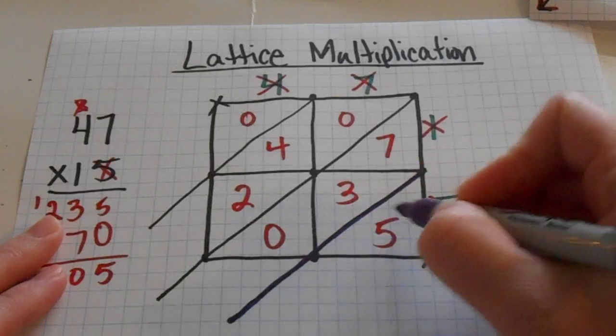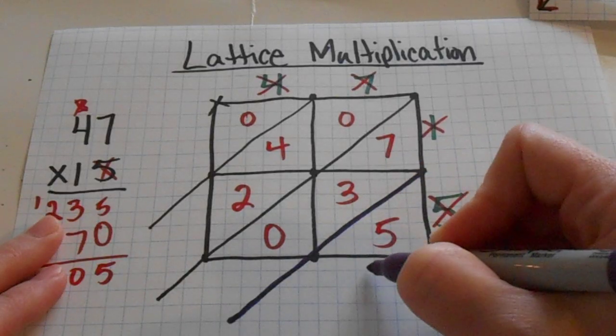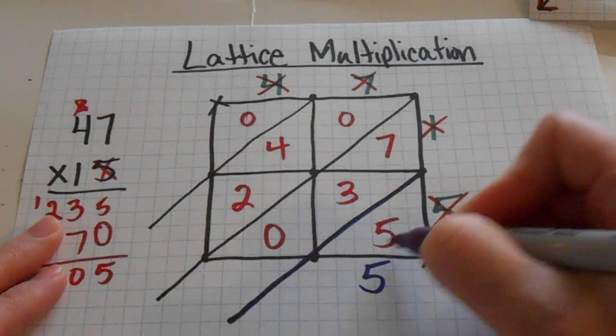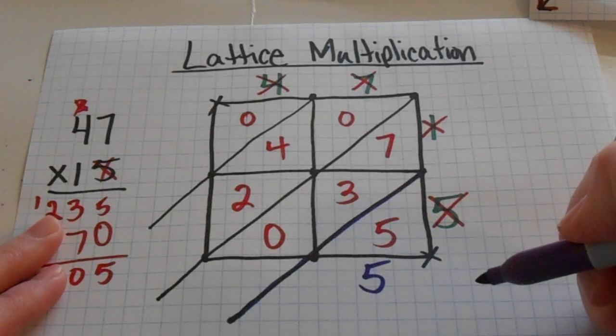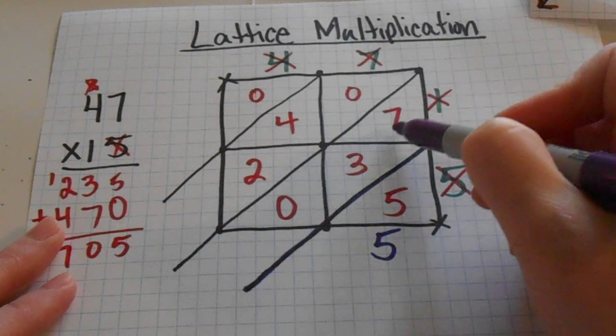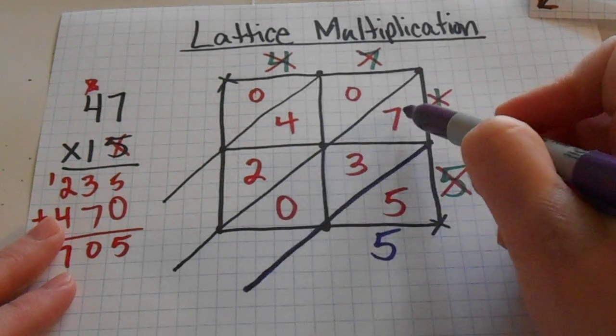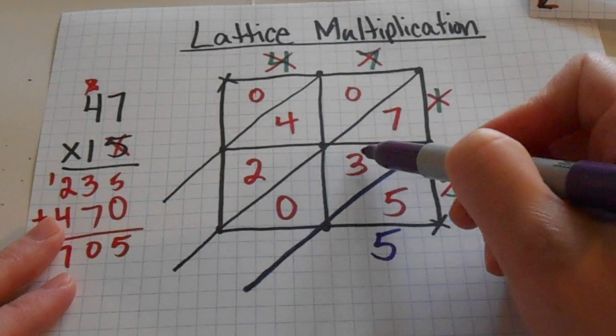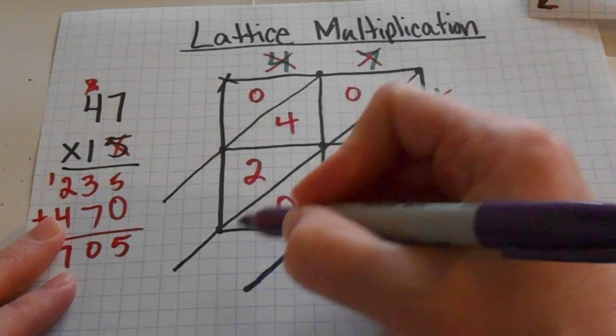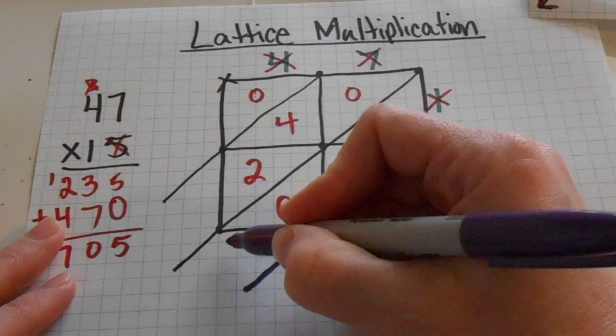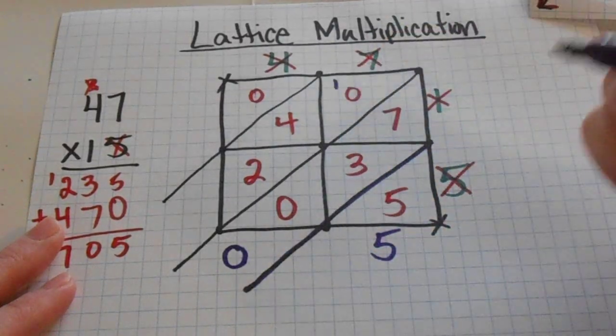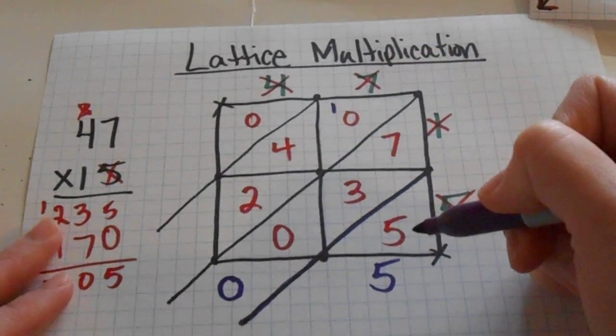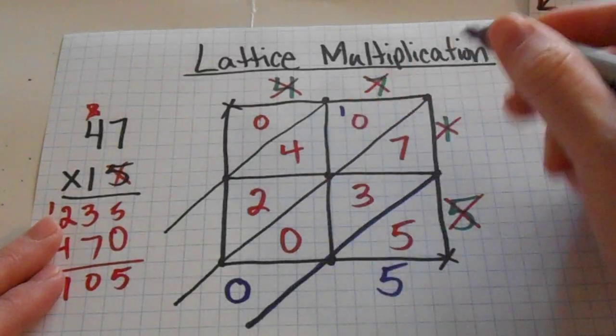So we're going to go down this first line and on the right side of this first line is a 5. And since 5 is the only thing in this area, the 5 is just going to drop down right here on the bottom. Now we're going to go to the next set, the next slide. So 7 plus 3 plus 0 is 10. Just like when we're adding, we're going to write the ones place down here and we're going to transfer that 1 over into the next area where we're going to be adding.